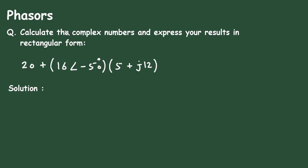In this video, we will see an example on phasors. The question is to calculate the complex number and express the results in rectangular form. We have to simplify this complex number and get the results in rectangular form.